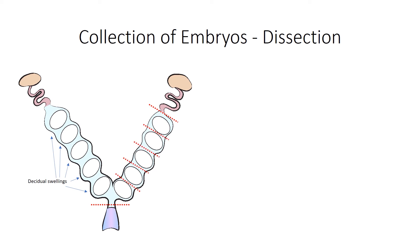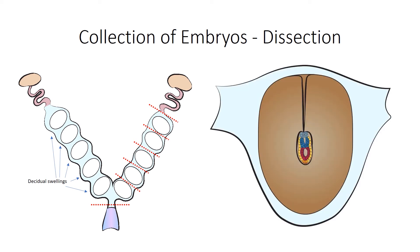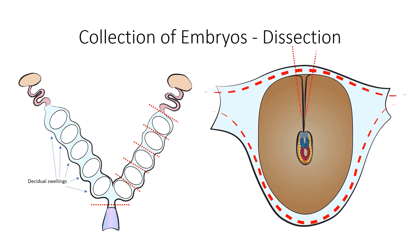Each single decidual must then be cleaned from the surrounding endometrium. The decidual shows a dark line across half of its structure, along which it must be opened, and at its end the embryo is located, which should be carefully retrieved.